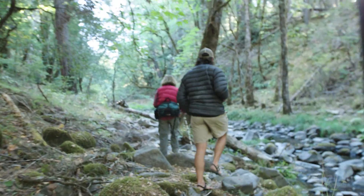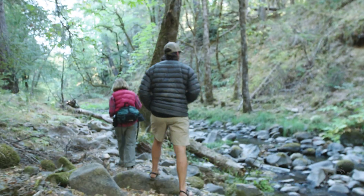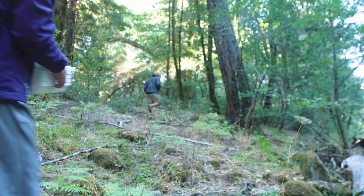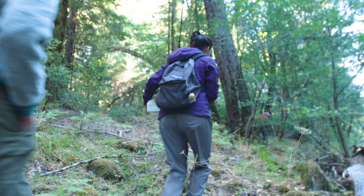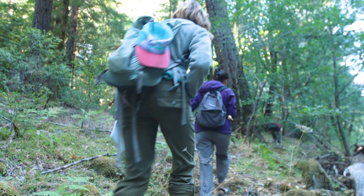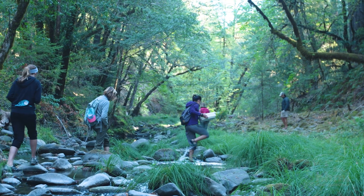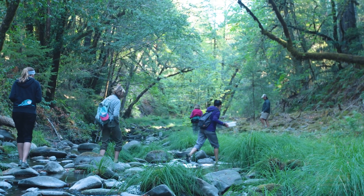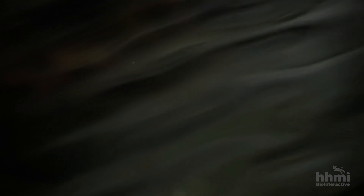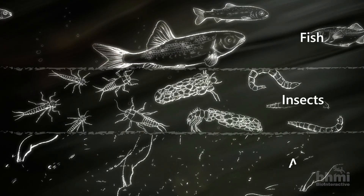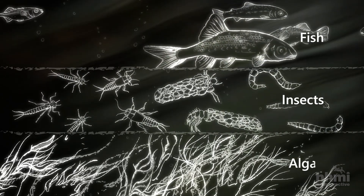Our Eyes on the Eel survey is ten Berkeley students and me, and we go out three times a summer. We focus on three groups of organisms to get a picture of the river's food web: the fish, the aquatic invertebrates, and the algae.